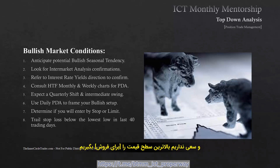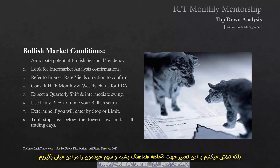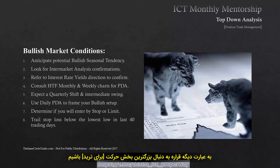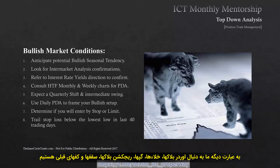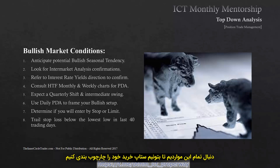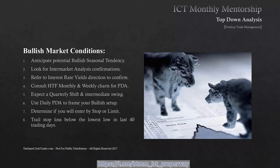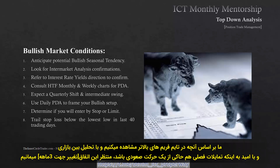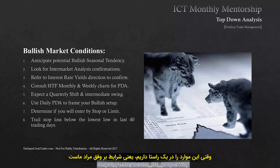We're not trying to pick the absolute low or the absolute high — we're trying to get in sync with that quarterly shift to get the meat in between, the biggest portion of the move. We use the daily PDAs to frame our bullish setups. We're looking for order blocks, voids, gaps, rejection blocks, old highs, old lows — looking for those things to frame our buy setup. We're waiting for that to occur based on what we see on the higher time frames with intermarket analysis, and hopefully a seasonal tendency is also suggesting a bullish move. When we have these things in alignment, we have a great deal of confluence and are looking for a high probability scenario.